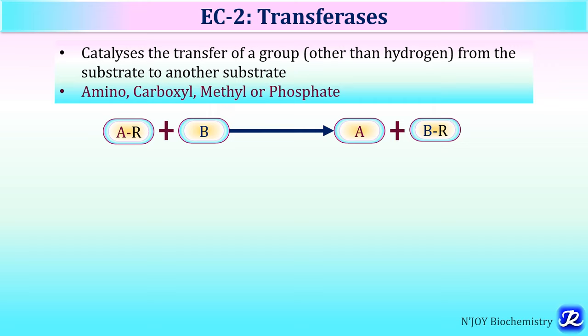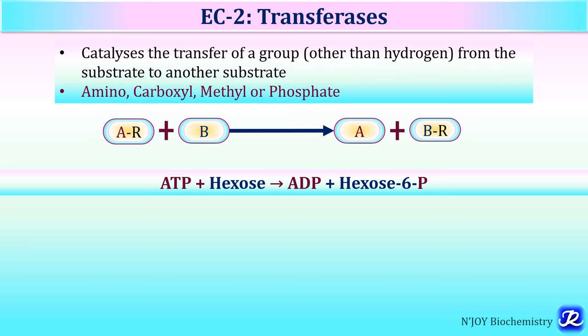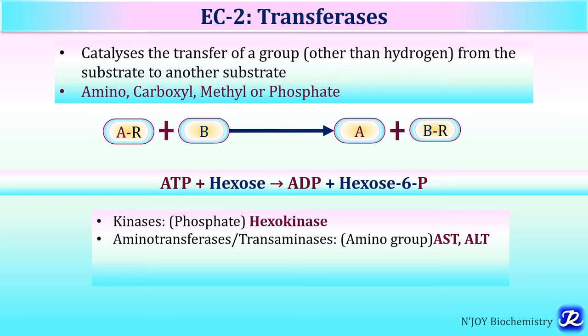This is represented as A-R + B → A + B-R, where R is the functional group transferred from A to B. For example, phosphate from ATP is transferred to hexose to form ADP and hexose-6-phosphate, catalyzed by hexokinase. Aminotransferases (transaminases) transfer an amino group from one amino acid to a ketoacid; examples include aspartate transaminase and alanine transaminase.